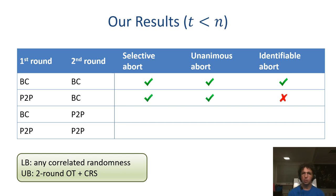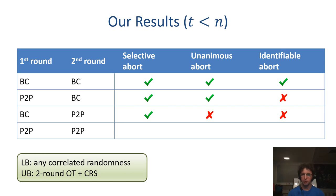Next, we show that unless both rounds are over a broadcast channel — namely, if the first round is run over a point-to-point channel — then identifiable abort cannot be achieved in general. On the other hand, if the second round is communicated over a broadcast channel, unanimous abort can be achieved. If the second round is over point-to-point, unanimous abort can no longer be achieved in general, even if the first round is over broadcast.